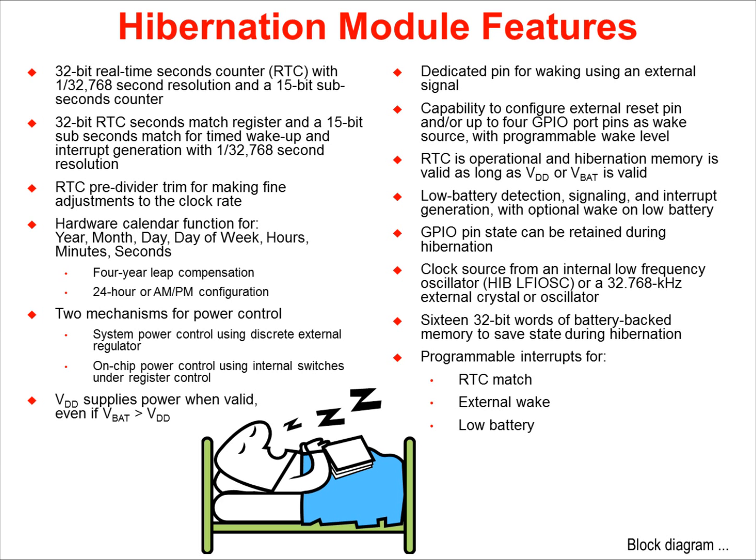There are two mechanisms for power control. On-chip power control can be accomplished using internal switches under register control, or system power control for the entire board can be done through a discrete external regulator. VDD supplies power to the device when it is valid, even if battery voltage is greater than VDD.